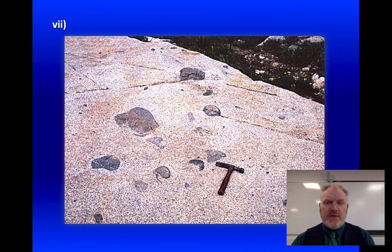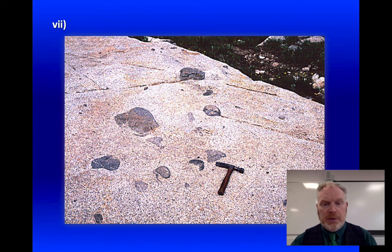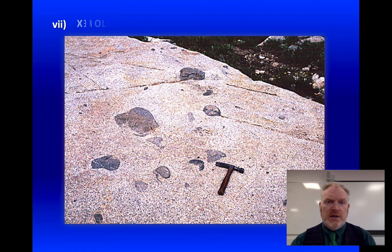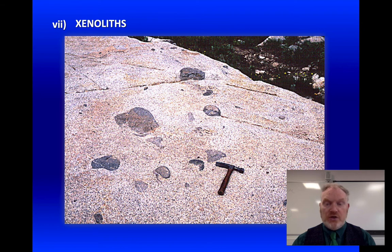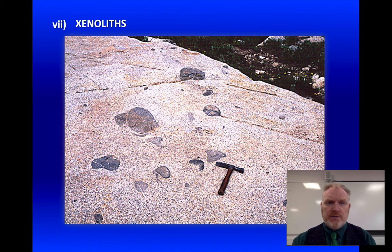Photograph number seven — we're looking at a surface of some granite with these black blobs in it. These black blobs are xenoliths — lumps of country rock that have fallen into the granitic magma. We now find them as these foreign rocks within the much lighter coloured granite.